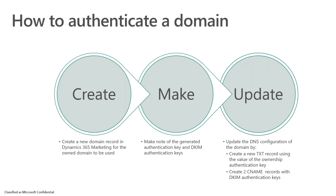How do I authenticate the emails? First, go into the application and create a new domain record, which causes Dynamics Marketing to generate the keys you need to use. Then pick up those keys and put them into your DNS configuration by creating a new TXT record using the ownership value, and then create two CNAME records with the DKIM authentication keys.